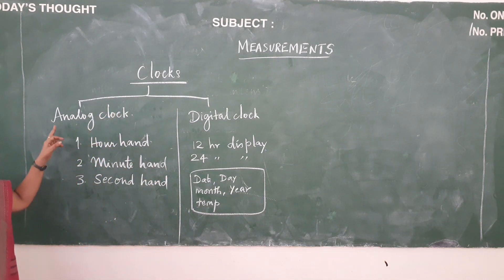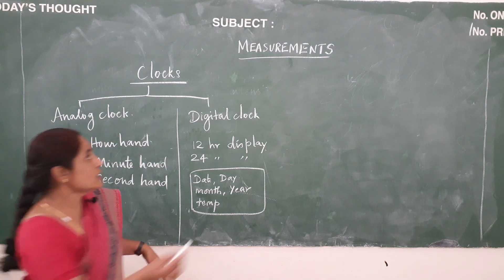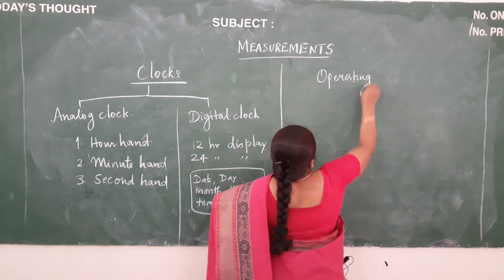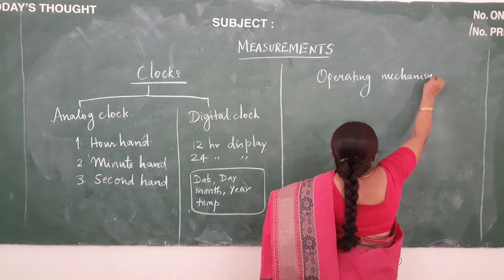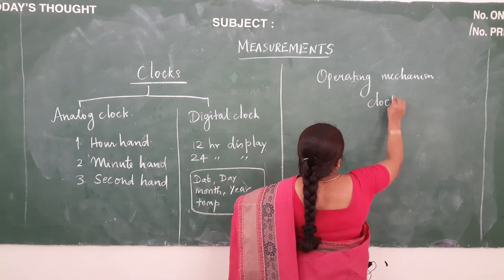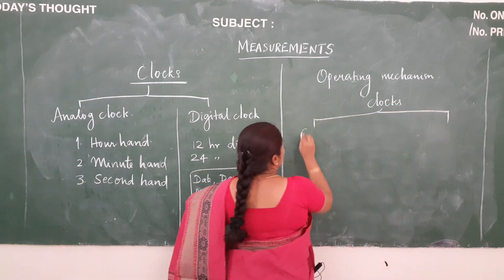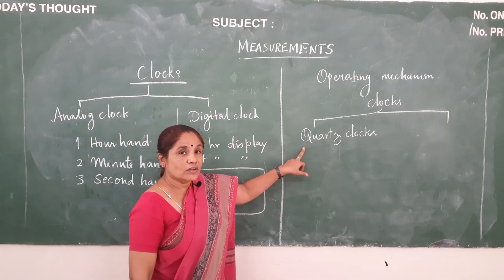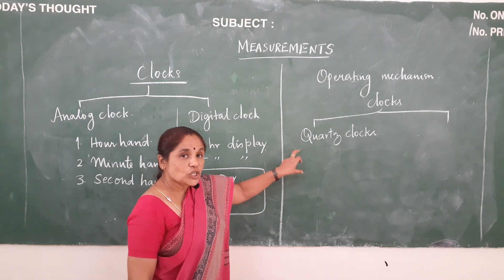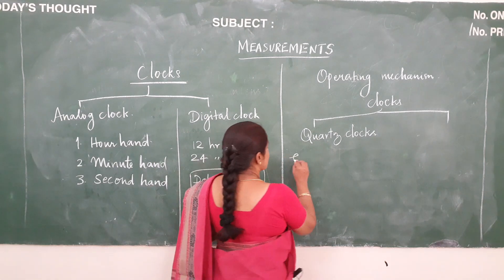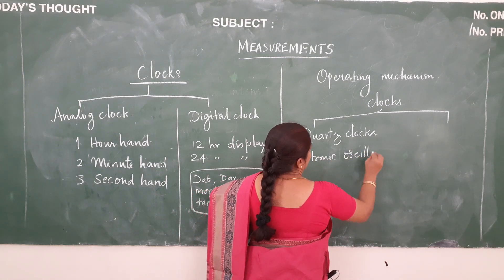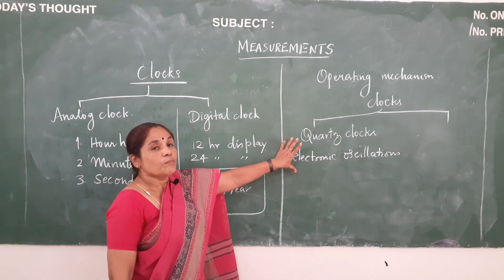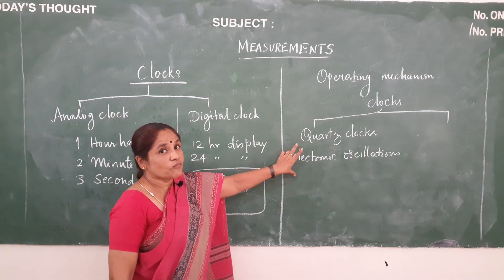Next we will move on to the classification of clocks based on their operating mechanism. Based on operating mechanism, clocks are again classified into two types. The first one is quartz clocks. In quartz clocks, these are activated by electronic oscillations which are controlled by the quartz crystal. Comparing mechanical clocks to quartz clocks, quartz clocks are very much more efficient.